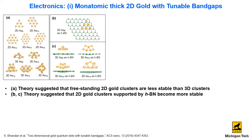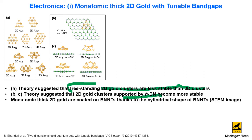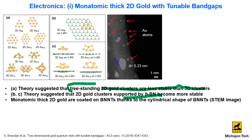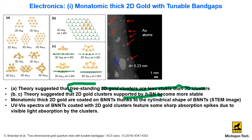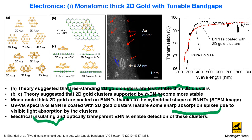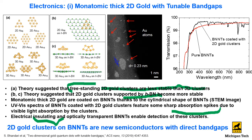Here are the take-home messages. 2D gold crystals are less stable than 3D crystals when freestanding, but they become more stable when supported on the surface of hexagonal boron nitride. Monoatomic thick 2D gold can be coated on boron nitride nanotubes thanks to their cylindrical shape. From UV-visible spectroscopy, boron nitride nanotubes coated with 2D gold feature sharp absorption due to visible light absorption by the cluster. Electrically insulating and optically transparent boron nitride nanotubes have enabled the detection of this cluster. In short, 2D gold crystals on BNNTs are new semiconductors with a direct bandgap.